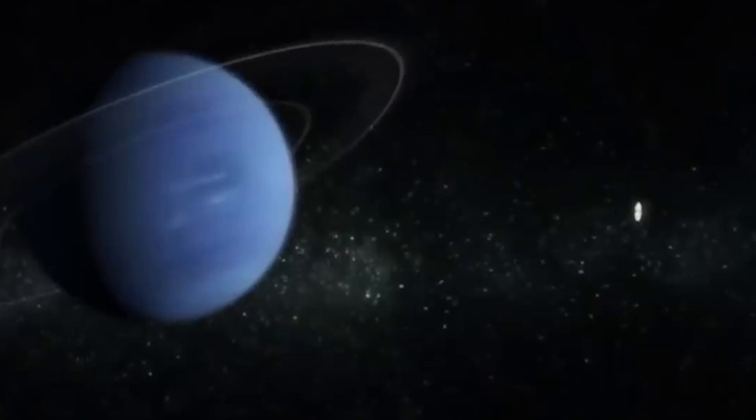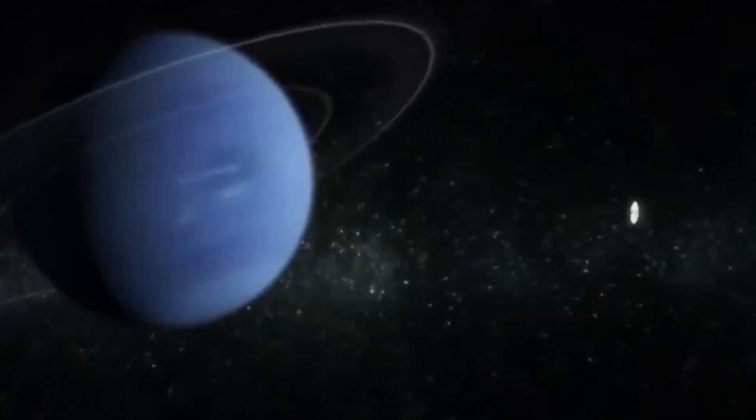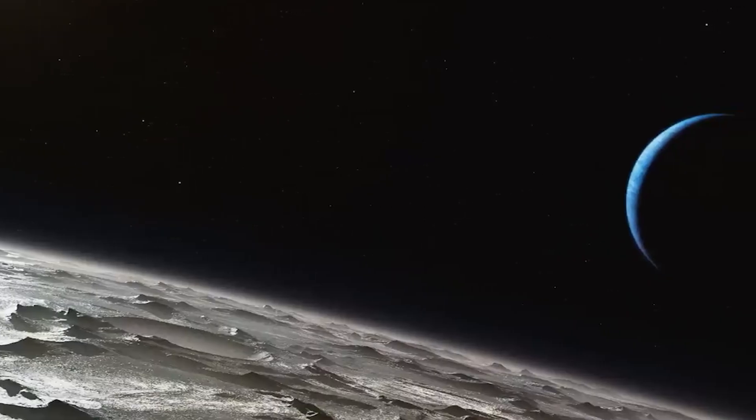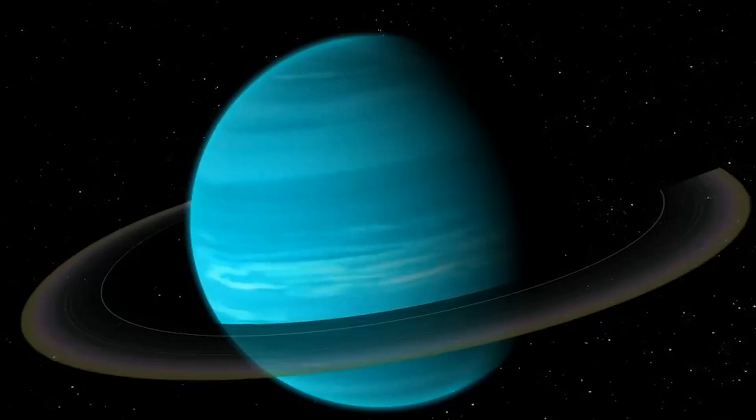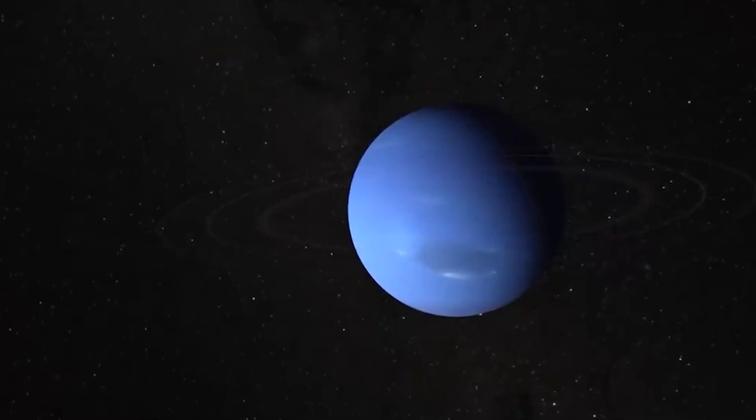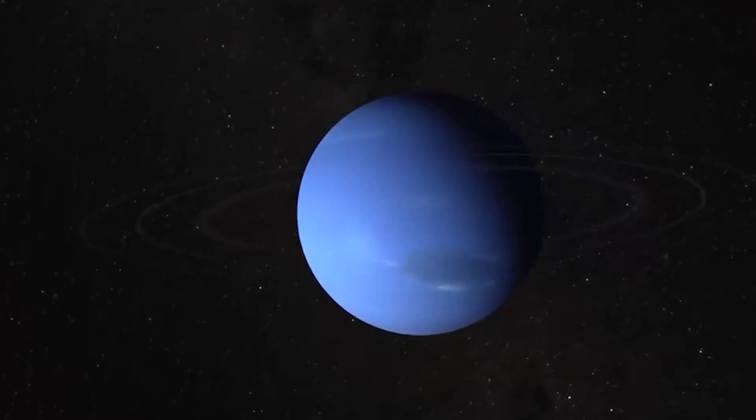There are five main rings, each named after astronomers who contributed to our understanding of Neptune: Adams, Le Verrier, Lassell, Arago, and Galle. These rings vary in brightness, size, and composition.